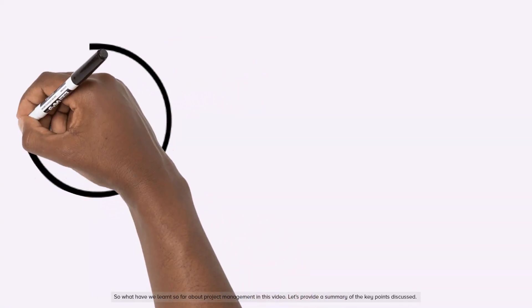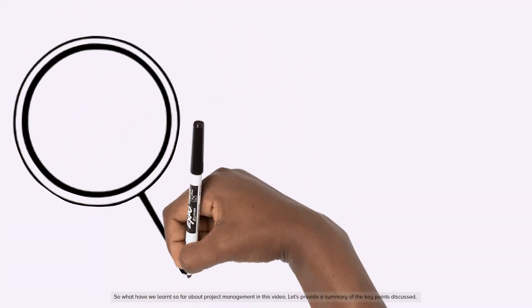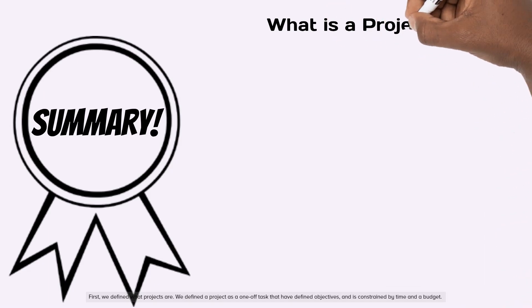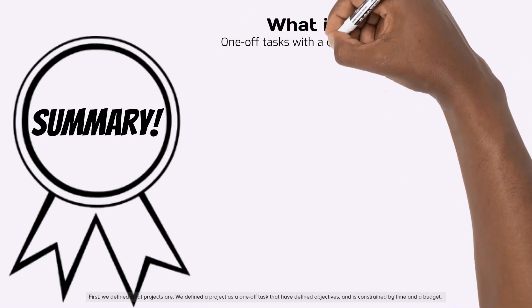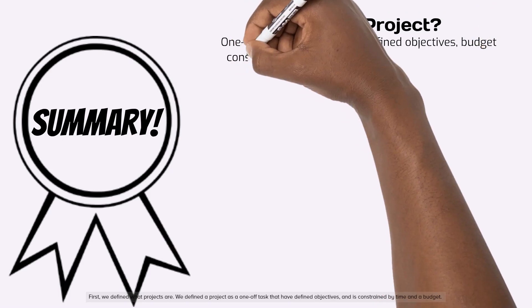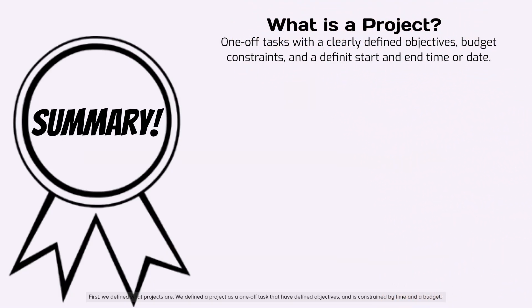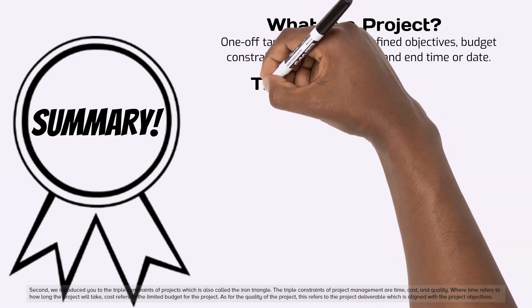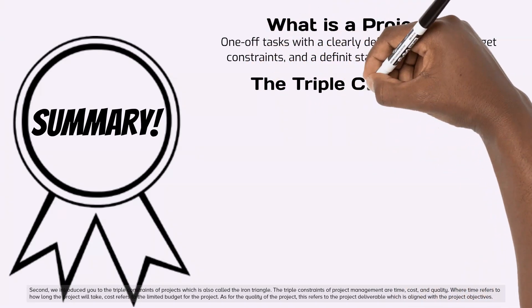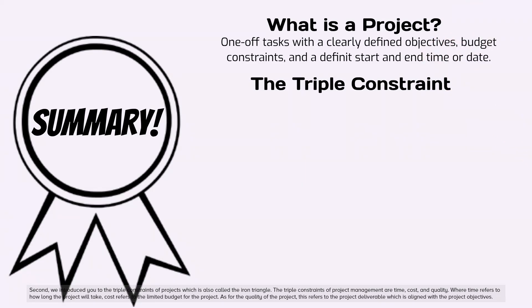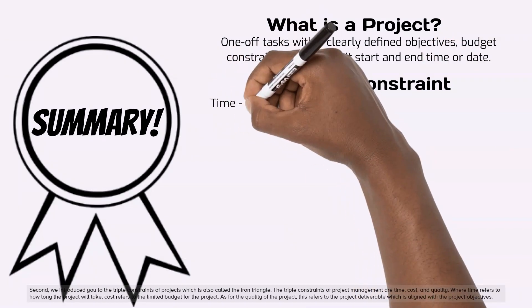So what have we learnt so far about project management in this video? Let's provide a summary of the key points discussed. First, we defined what projects are — a project is a one-off task that has defined objectives and is constrained by time and a budget. Second, we introduced the triple constraints of projects, also called the iron triangle. The triple constraints of project management are time, cost, and quality.